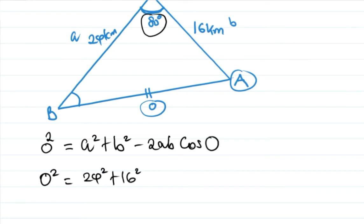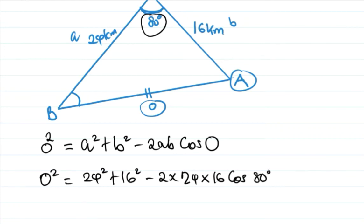O square is A, the 24, so we are putting there 24 squared plus B, the 16, so 16 squared, then minus 2 times 24 times 16 times cos 80 degrees.